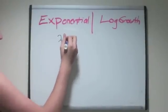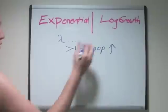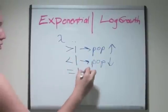If lambda is greater than 1, the population is increasing. If it is equal to 1, the population is stable, and if it is less than 1, the population is decreasing.